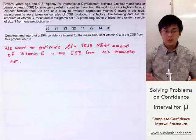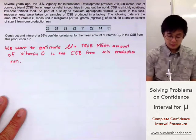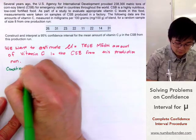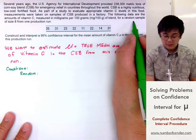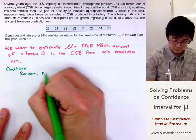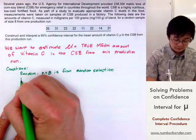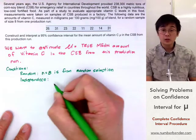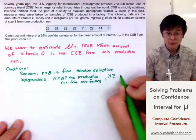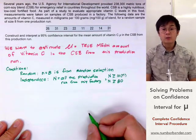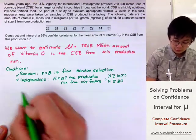After establishing our parameter, now we can start verifying our three conditions: randomness, independence, and normality. For our conditions, we know that it's random because it came from a random sample of size 8 from one production run. Our independence is also satisfied because our population will be equal to 80, so our population size is greater than or equal to 80.